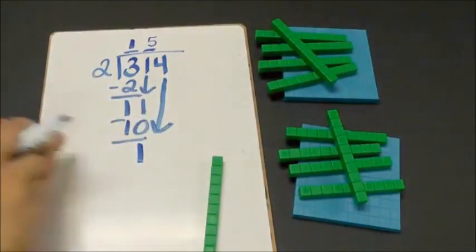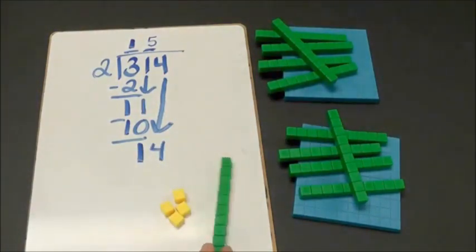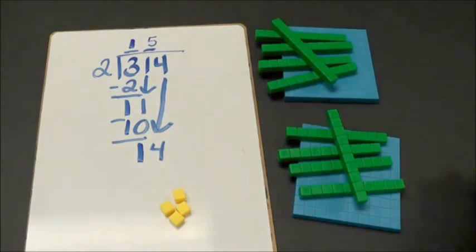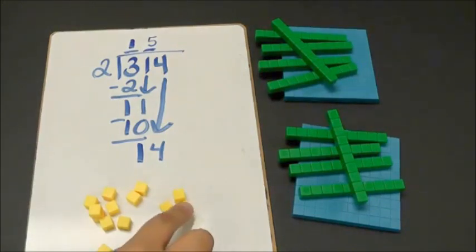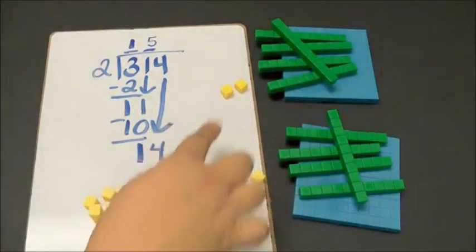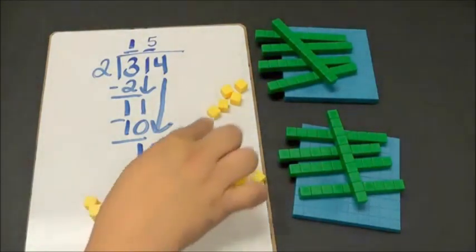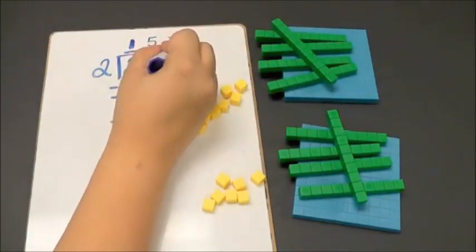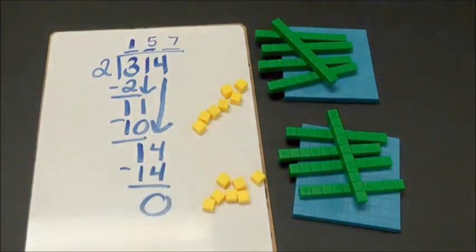I bring down my 4 ones. Now I have 14. I am going to trade my 1 ten for 10 ones. Here are my 14 ones. I am going to divide them into my 2 groups. Each group has 7. 7 ones times 2 is 14, and I have a remainder of 0.